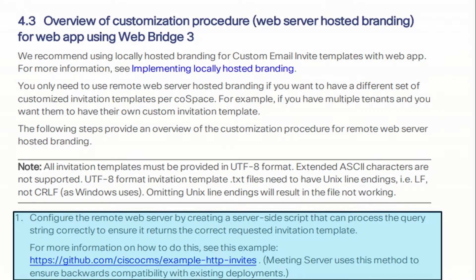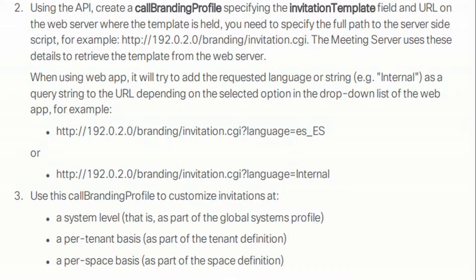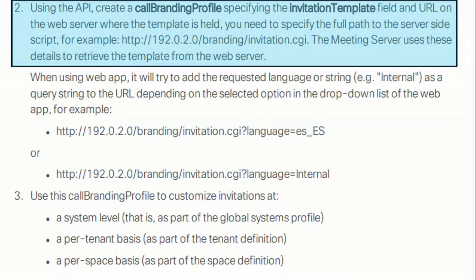Cisco provides a GitHub sample of how to do this. However, we're going to use a GitHub that I created, with explanations on how the script will work and some sample files. To get the web server to start serving up invitation templates, we need to do some pre-configurations on the CMS server. First, using the API, we'll create a call branding profile. In the invitation template field, we specify a URL for the web server where the template is held — for example, http://192.0.2.0/branding/invitation.cgi. This developer uses a CGI script on his web server to fetch the template files.